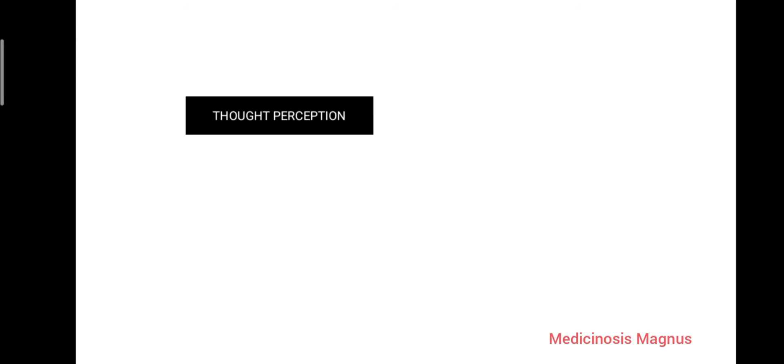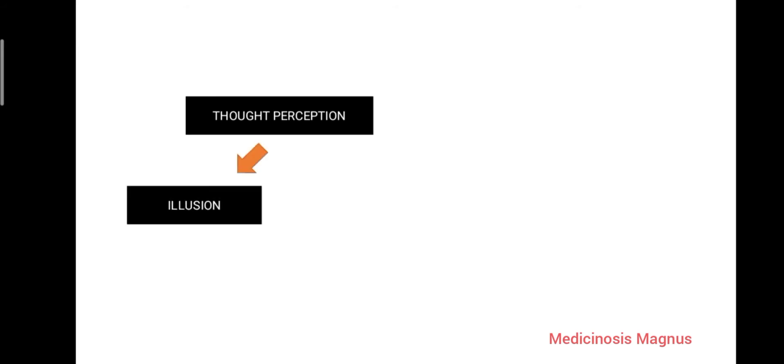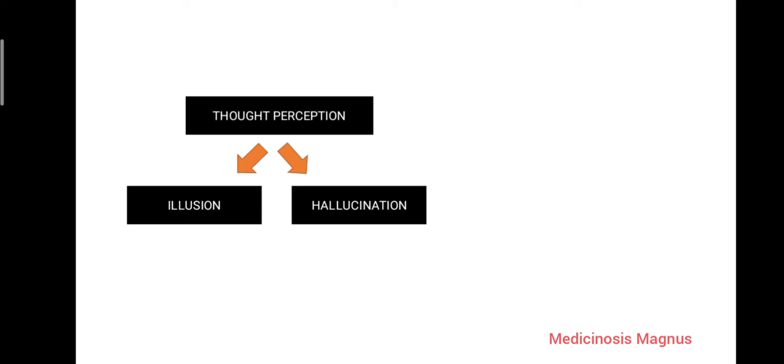There is something called thought perception — something felt through the sensory organs like hearing, seeing, and feeling. Thought perception mainly has two types of disorders: illusion and hallucination.